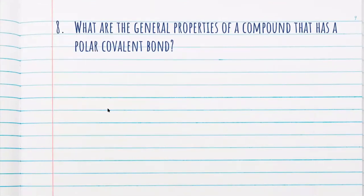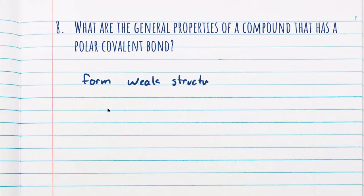What are the general properties of a compound that has a polar covalent bond? They share the same characteristics as normal covalent bonds. The main difference is that they're able to form weak structures. While the structures they form are similar to those found in ionic bonds, ionic structures are held by ions — by positive and negative charges. Polar covalent bonds don't have that charge holding them together, so these structures are fairly easy to break and therefore pretty weak.